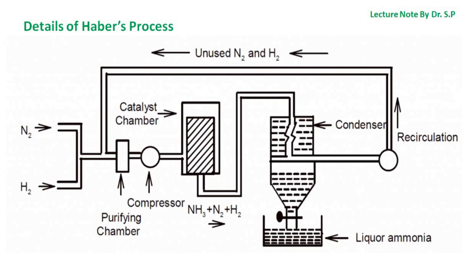Details of Haber's Process for the manufacture of ammonia are shown in the diagram. Nitrogen and hydrogen are passed in the ratio of 1:3 as shown. Avogadro's law states that equal volumes of gases at the same temperature and pressure contain equal numbers of molecules, meaning the gases enter the reactor in the ratio of 1 molecule of nitrogen to 3 molecules of hydrogen.